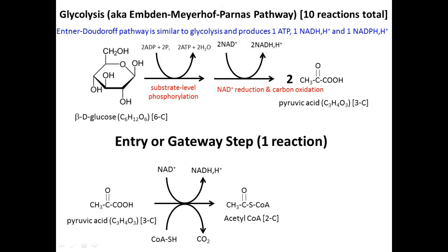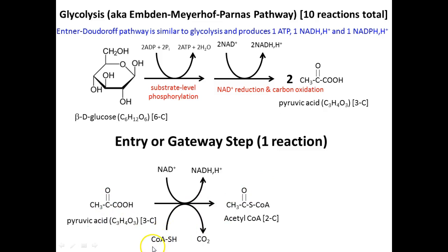This is the Embden–Meyerhof–Parnas pathway of glycolysis. There's also the Embden–Meyerhof pathway, another way of breaking down glucose, but the yield is slightly different: just one ATP, one NADH, and one NADPH, a different electron carrier. Most of the time you learn about the first one. Once we have pyruvate, that can be converted — acetyl-CoA is added, you lose carbon dioxide, so you're losing a carbon in the process — and the electron carrier NADH picks up more electrons to bring to the electron transport chain.